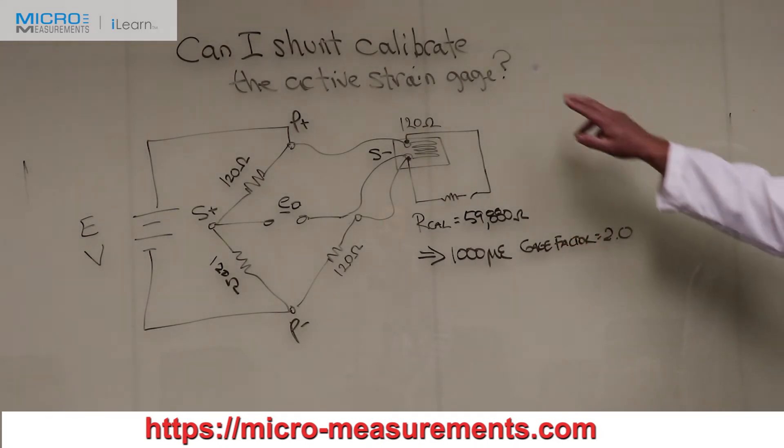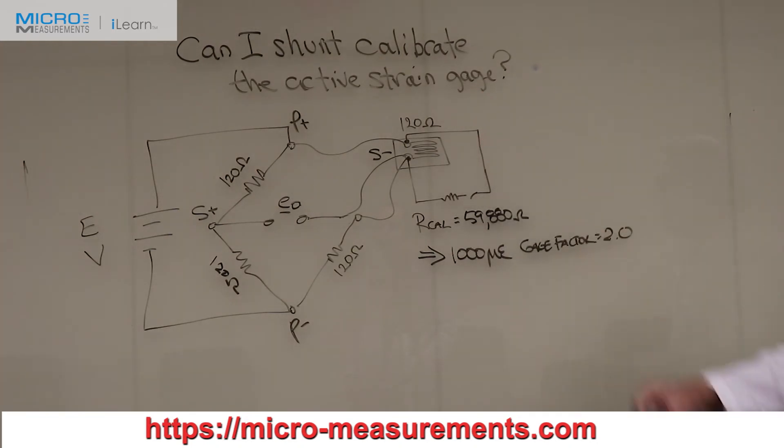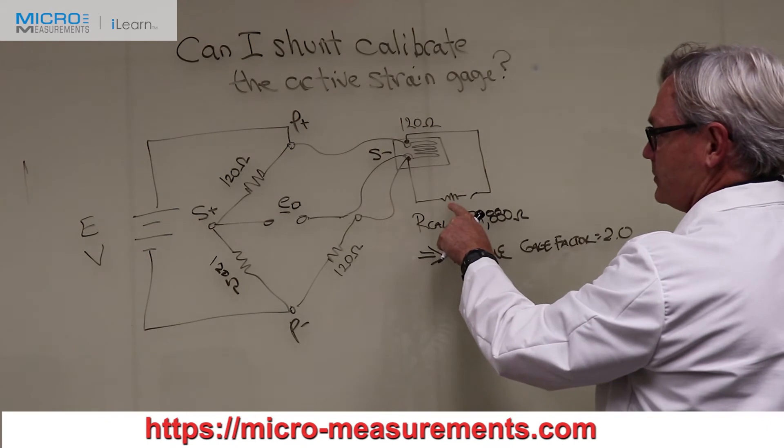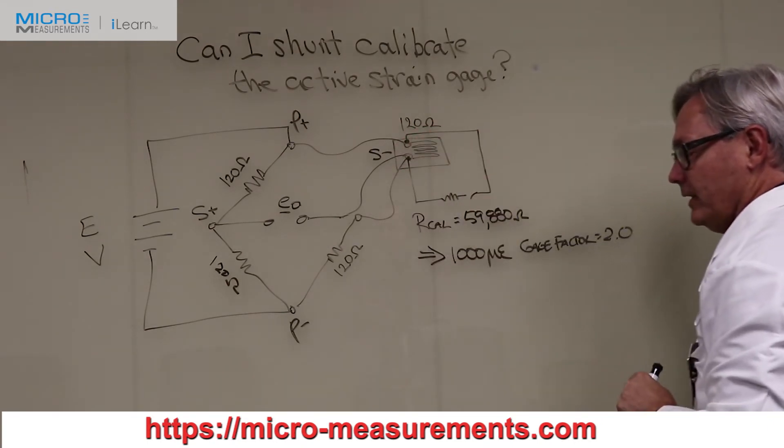Now, to answer this question, can I shunt calibrate the active strain gauge, the obvious answer is yes. You can take this calibration resistor, maybe put a switch on it, connect it right across the active gauge.